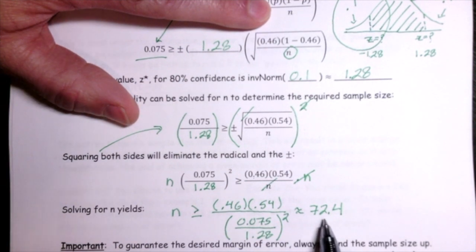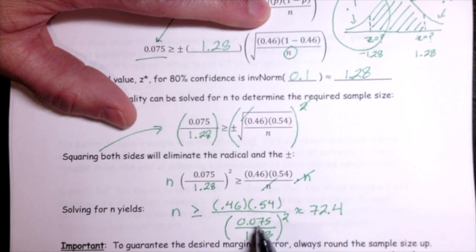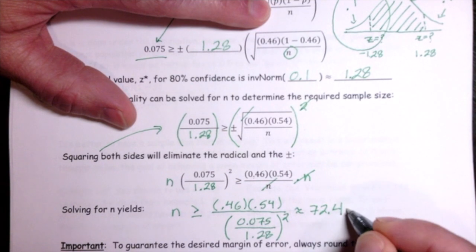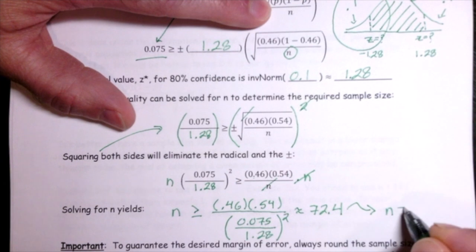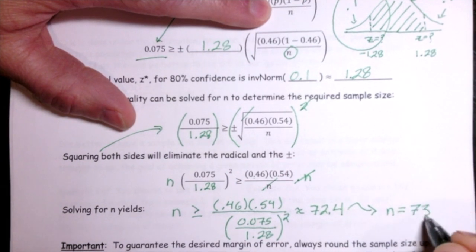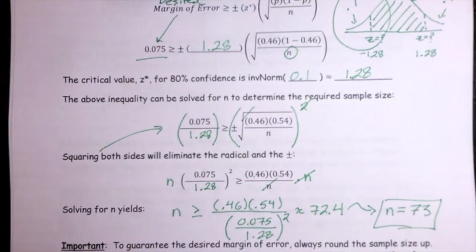The typical way of rounding would take 72.4 and round it down to 72, but that 0.4 of an observation is needed to guarantee our margin of error. So when working with a sample size to establish a margin of error, you always round up. Here our answer is a sample size of 73.